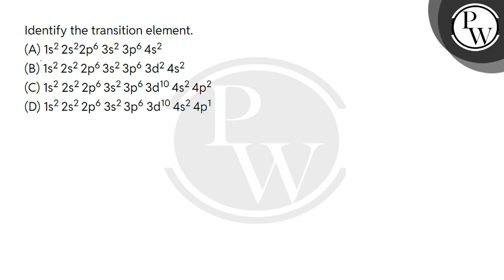You need to identify the transition element in configuration. So, if I look at this one here, 1s² 2s² 2p⁶ 3s² 3p⁶ 4s². Meaning, the electron is balanced.